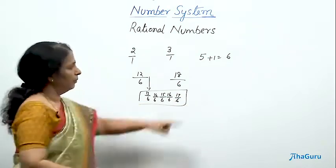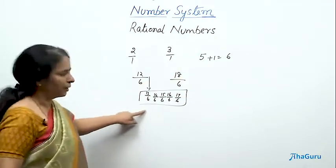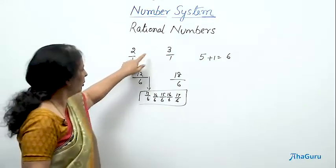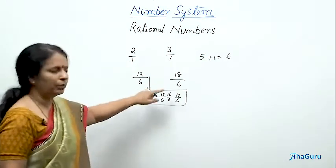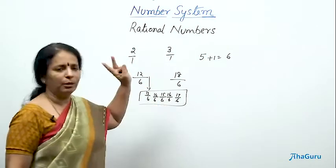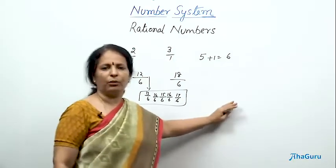And how many you wanted? 5. You got those 5. They lie between 2 and 3. 13 by 6, 14 by 6, 15 by 6, 16 by 6 and 17 by 6. So, it's one of the easiest method of finding.